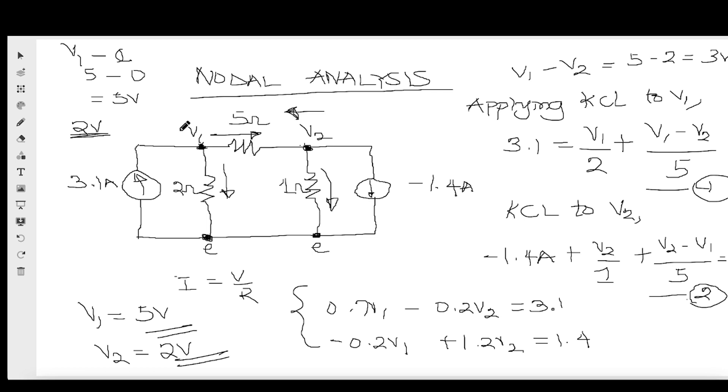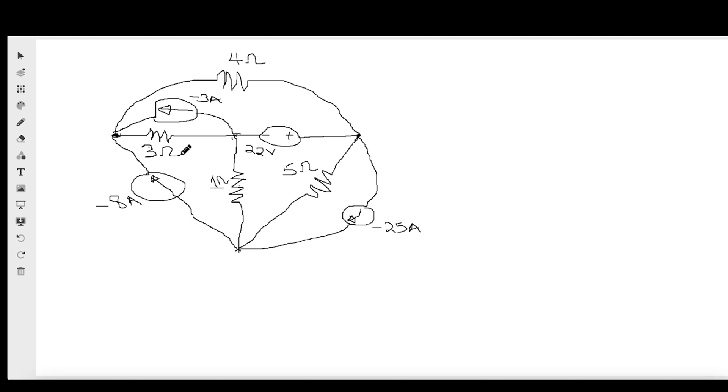The last topic is super node analysis — a special case of nodal analysis. A super node occurs when there is a voltage source between two non-reference nodes. This makes it difficult to apply KCL directly because we cannot easily determine the current through the voltage source. That is where super node analysis comes into play.